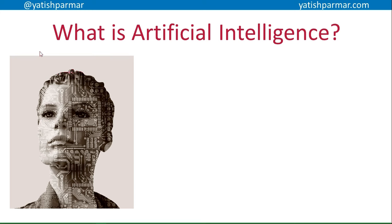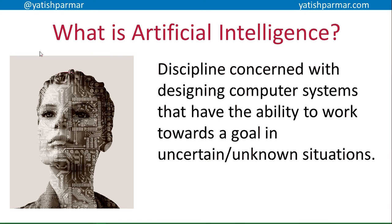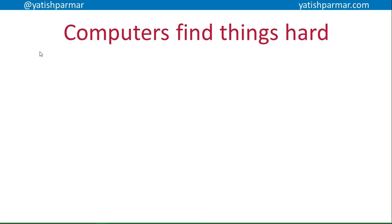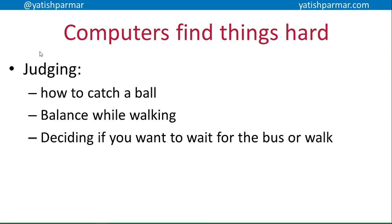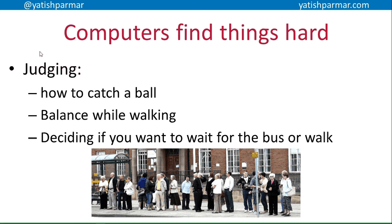We kicked off with looking at what artificial intelligence is, and we talked about intelligence being the ability to resolve a situation when it's an uncertain or unknown environment — you've never solved this particular problem before, but you've got enough background knowledge to figure out how to solve it. We also looked at how computers find it very difficult to judge a situation and work out the best possible conclusion to resolve it.